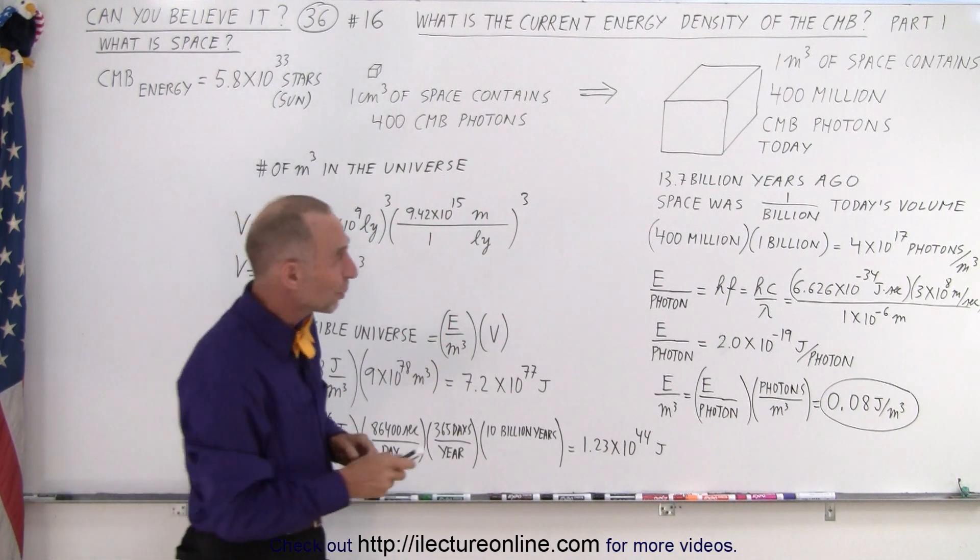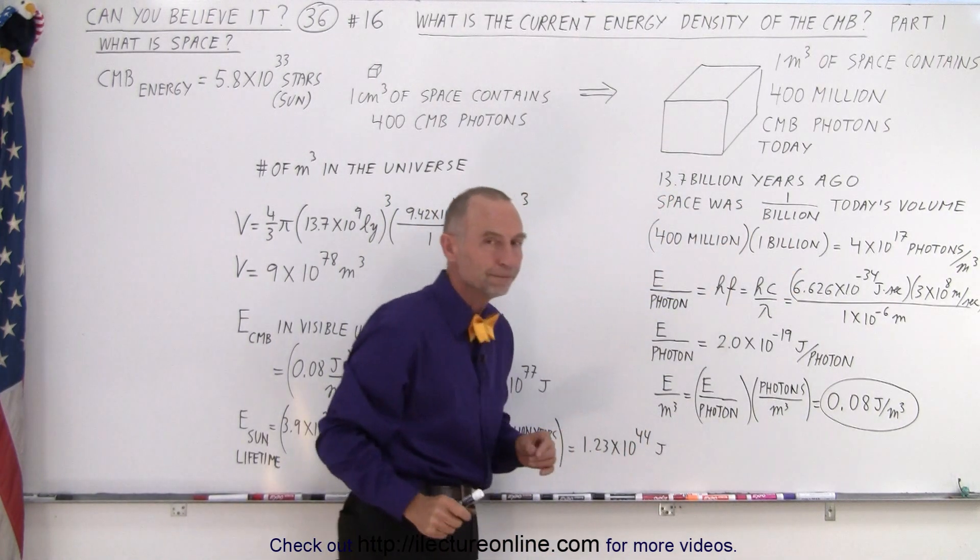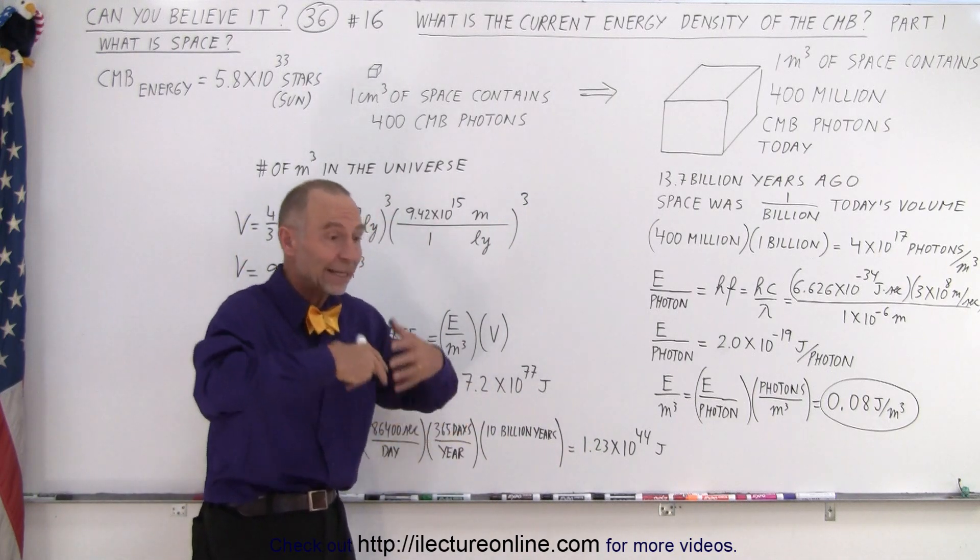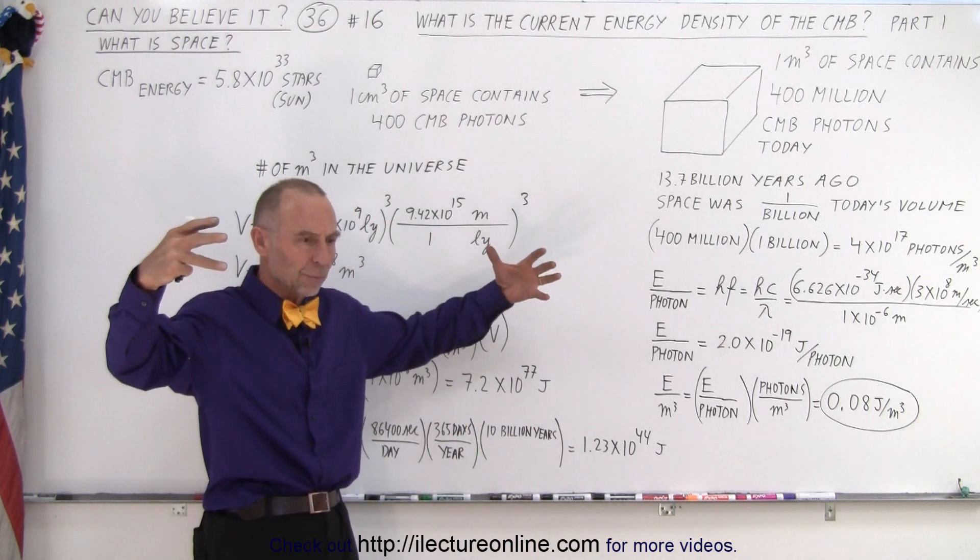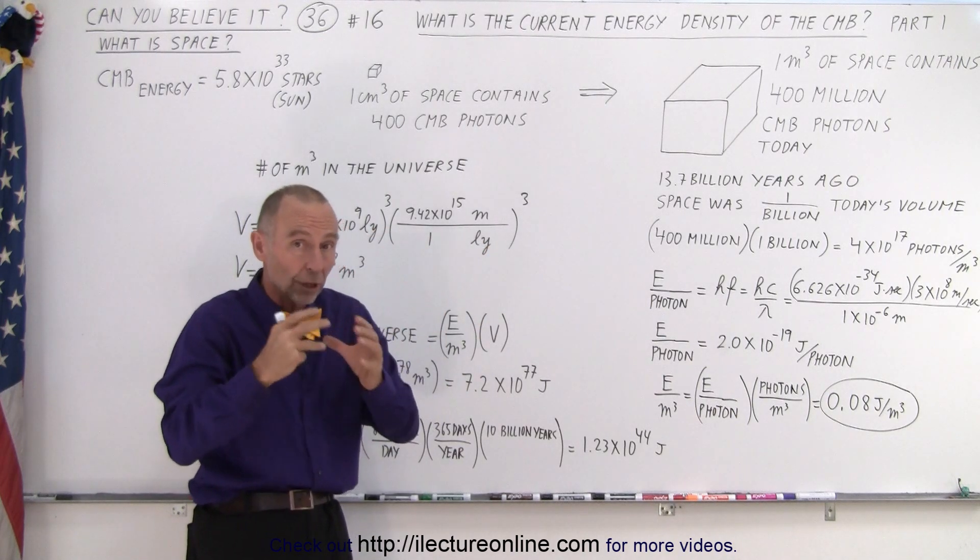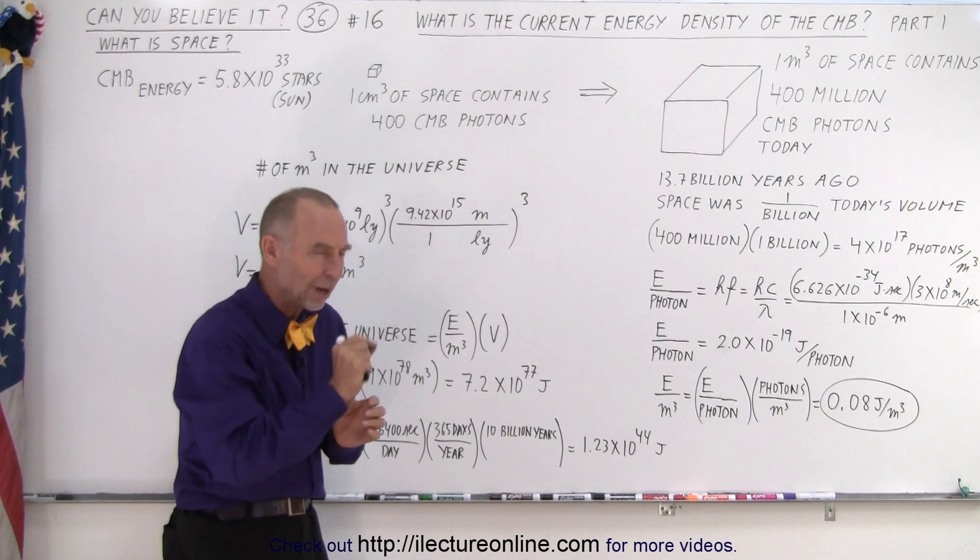But 13.7 billion years ago, space was only 1 billionth of today's volume. Which means that 13.7 billion years ago, at decoupling, the universe was a lot more dense, and also the photons, the CMB photons, were a lot more dense. And they were a lot more energetic, because they had a lot shorter wavelengths.